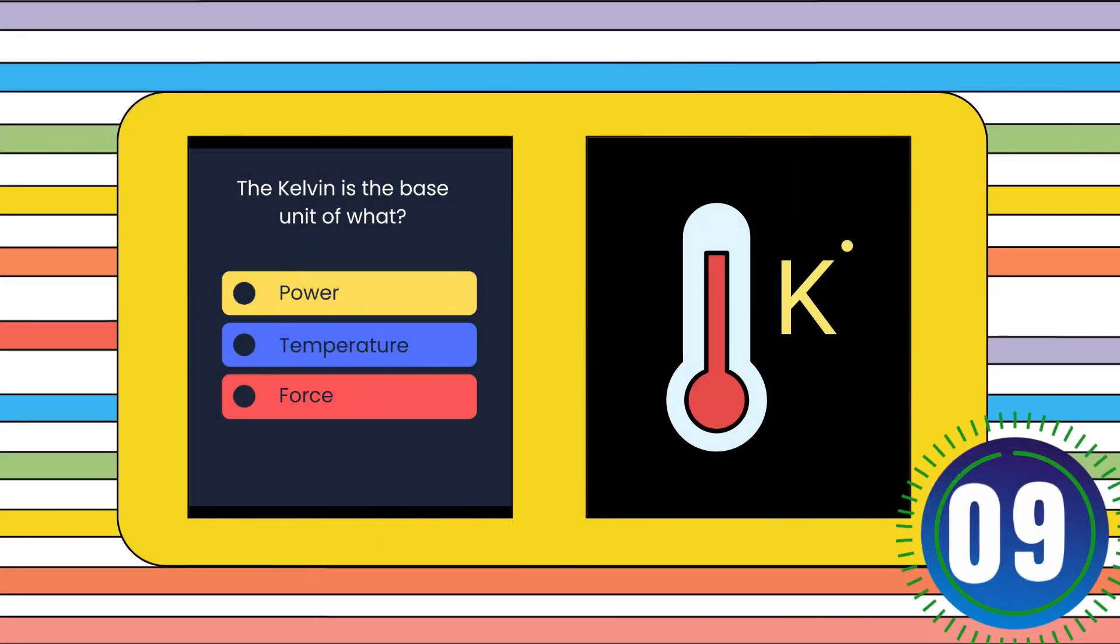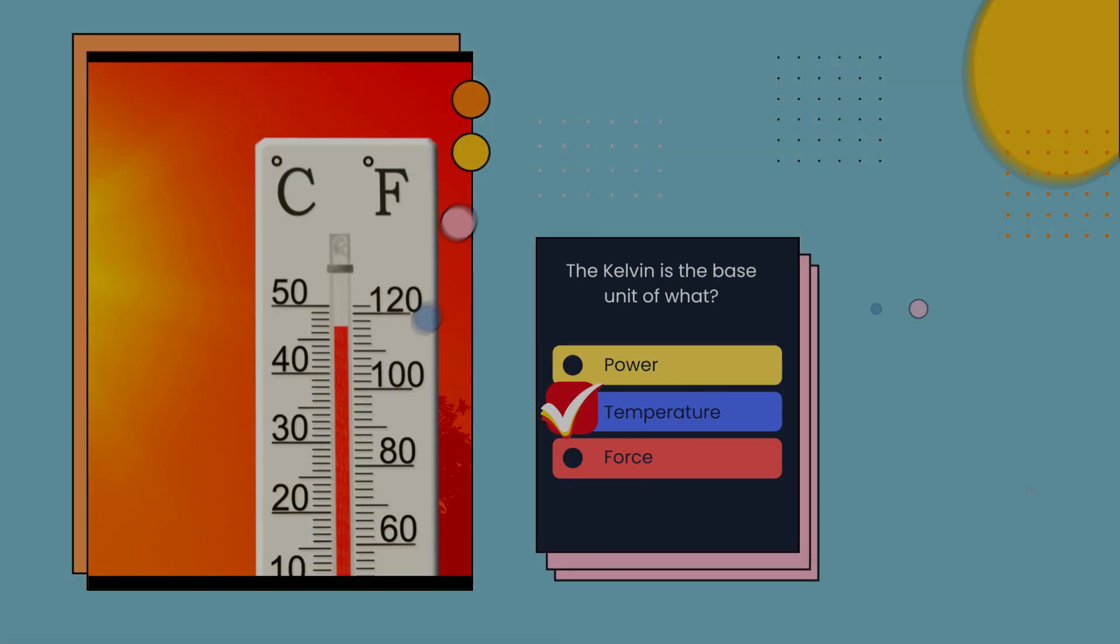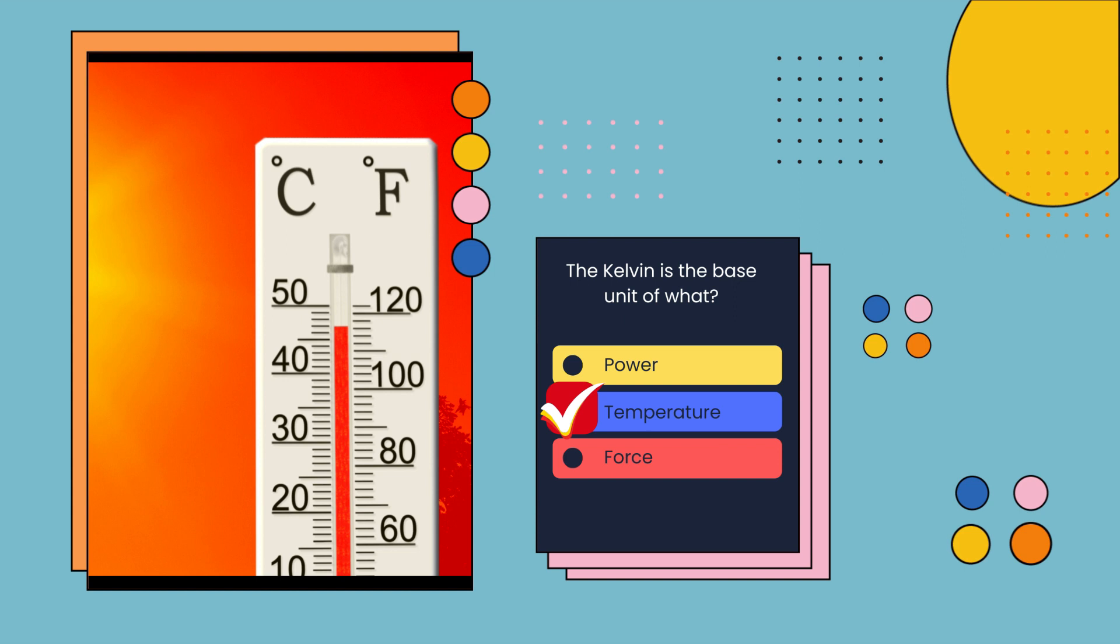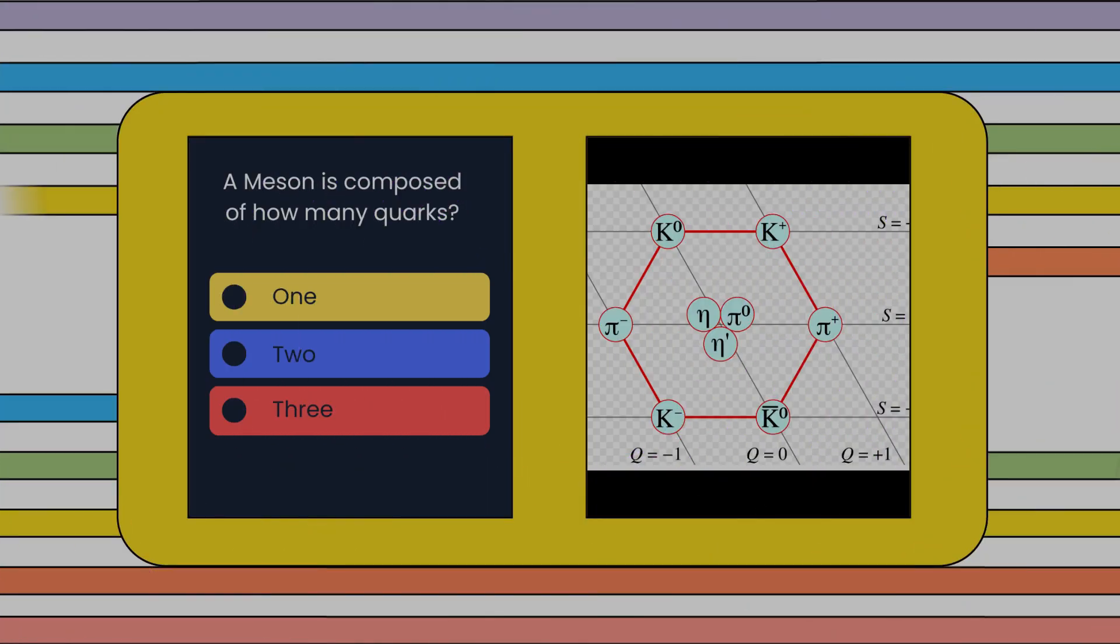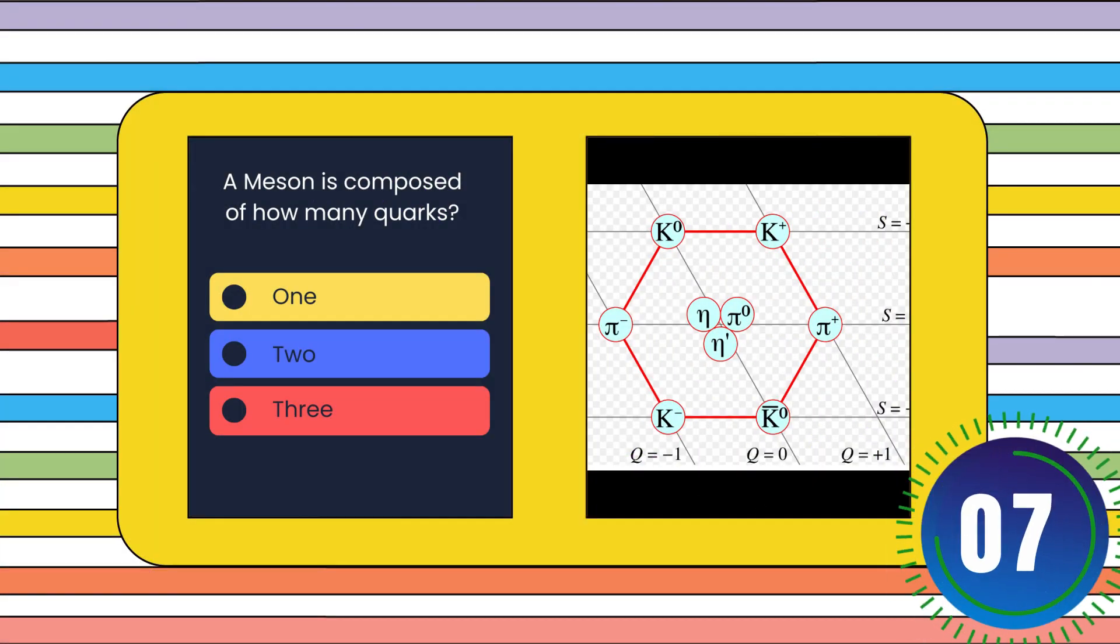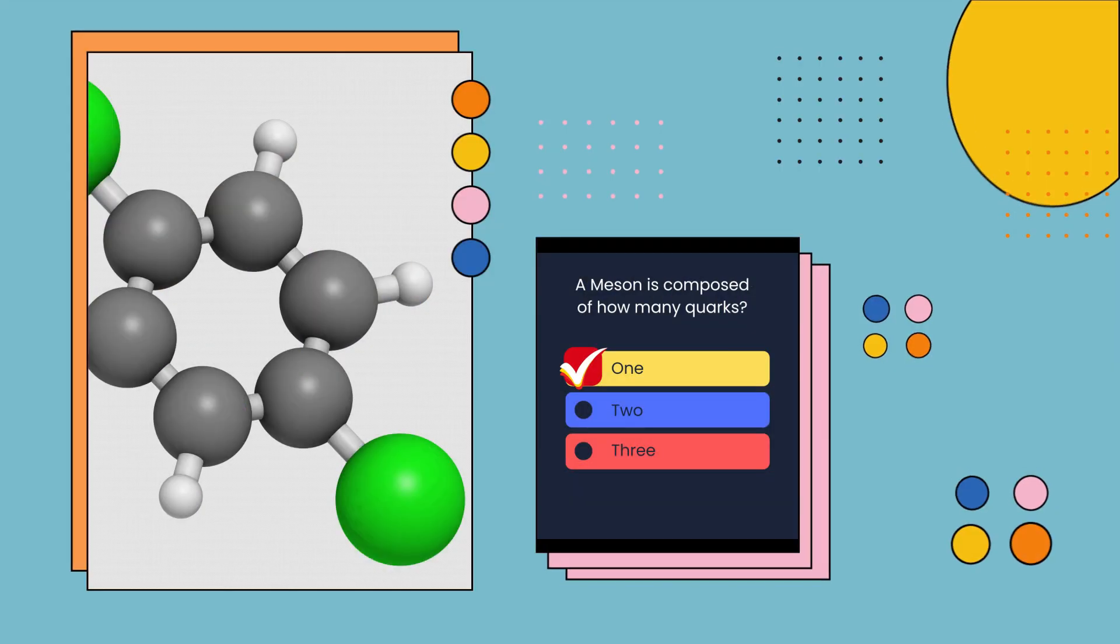The Kelvin is the base unit of what? Power, temperature, or force? Temperature. A meson is composed of how many quarks? One, two, or three? One.